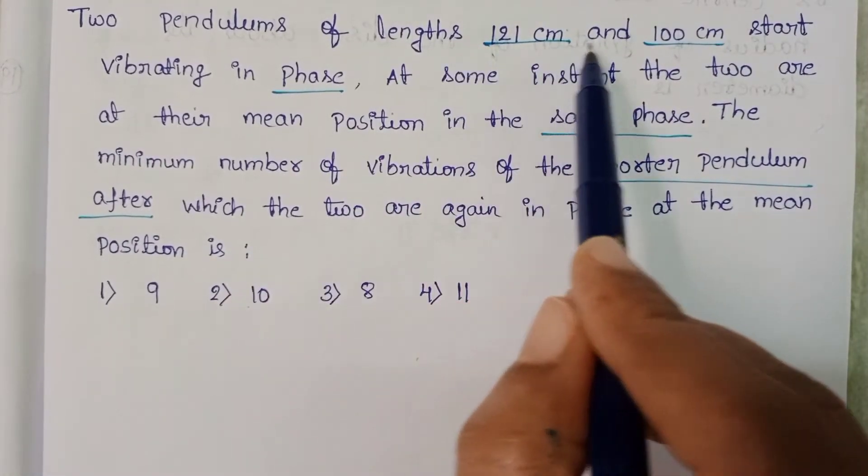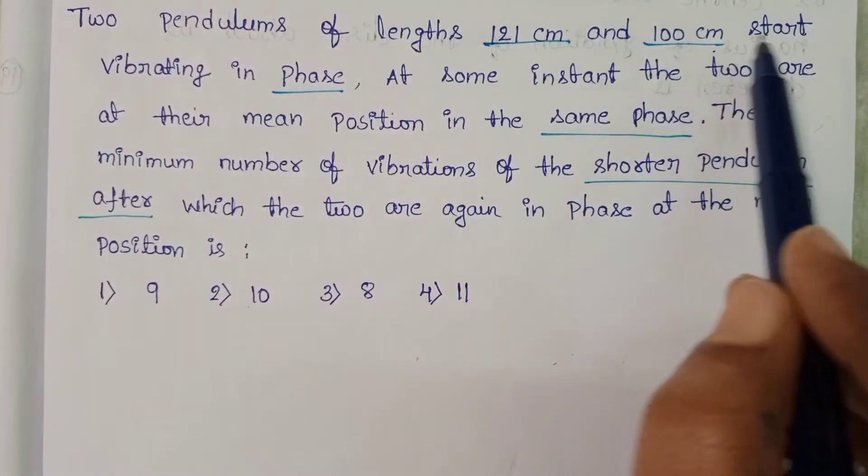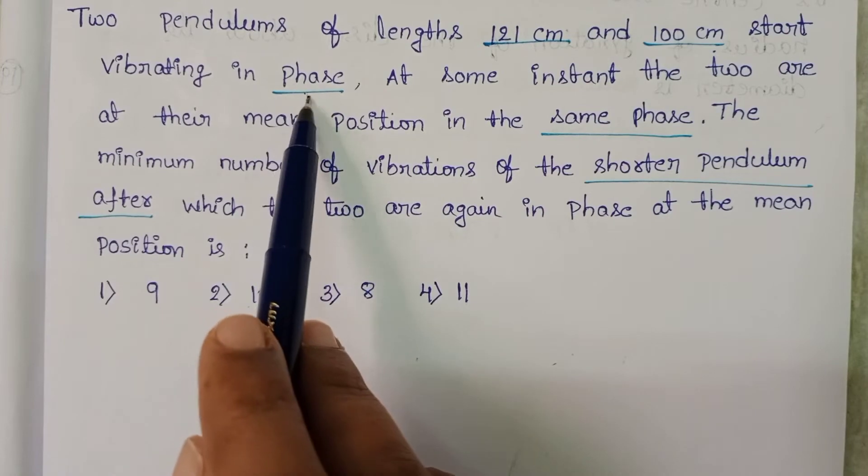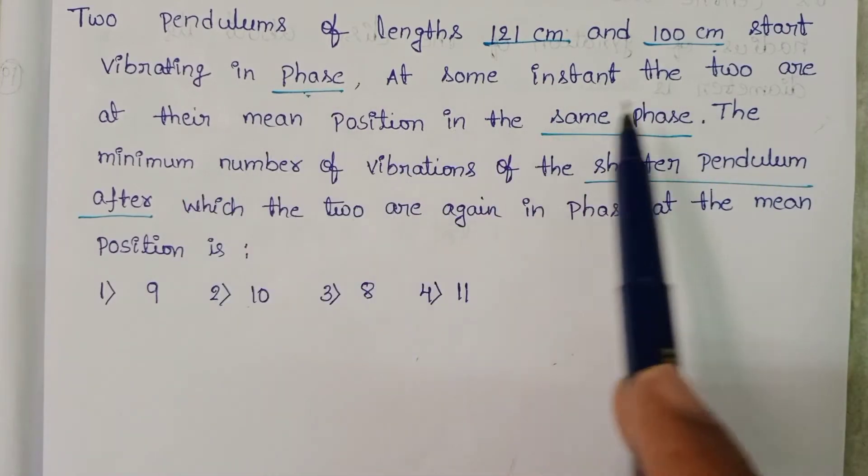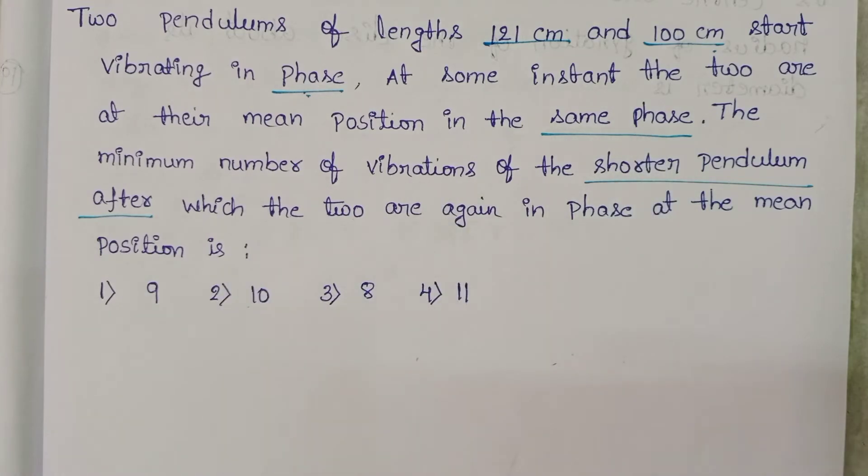Two pendulums of lengths 121 cm and 100 cm start vibrating in phase. At some instant the two are at their mean position in the same phase. The minimum number of vibrations of the shorter pendulum after which the two are again in same phase.